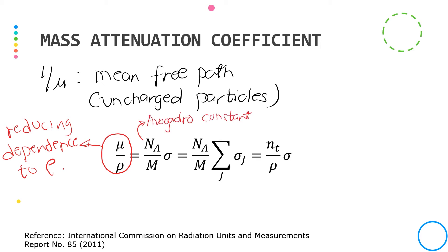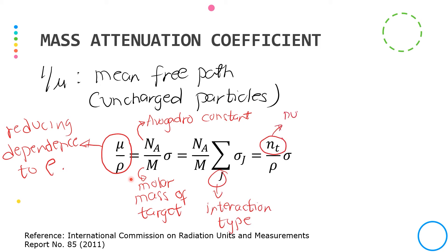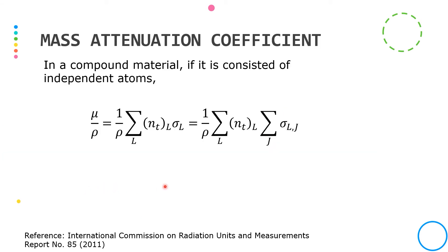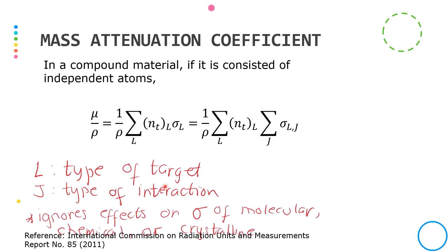The relationship of mass attenuation coefficient with the total cross-section involves Avogadro's number divided by the molar mass of the target. We can also express the mass attenuation coefficient in terms of the individual cross-section for each interaction type J. Additionally, it can be expressed in terms of the number density of target entities in a volume element divided by its volume. In a compound material consisting of independent atoms, the mass attenuation coefficient can be expressed in terms of cross-sections where L is the type of target and J is the type of interaction, ignoring effects on the cross-section of the molecular, chemical, or crystalline environment of the atom.